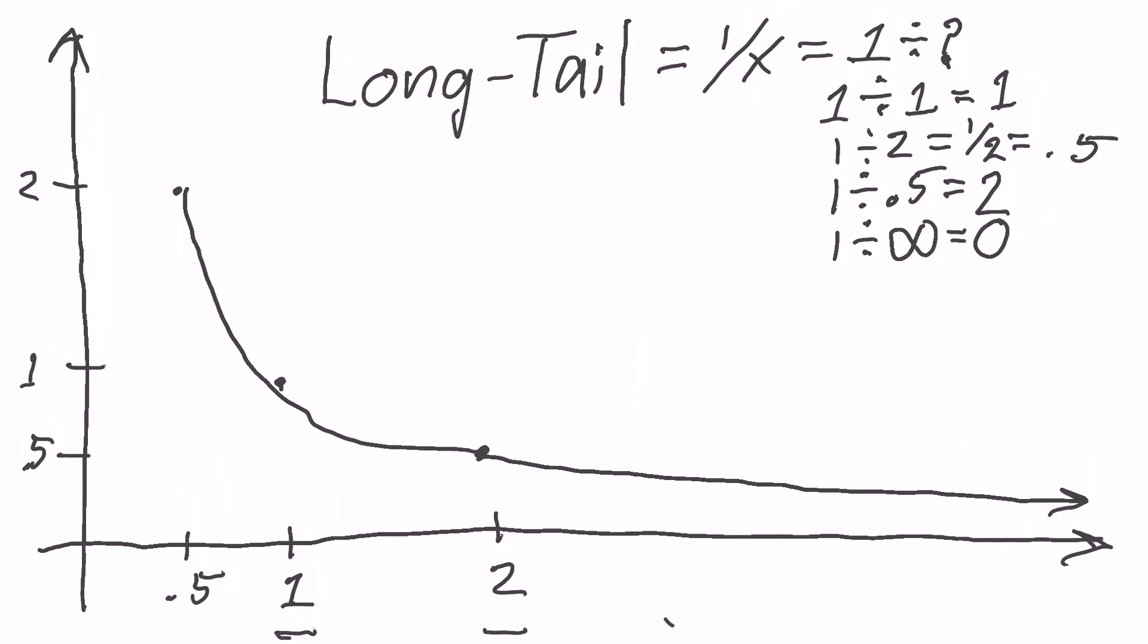And what about if you put smaller numbers in? 1 divided by 0. Well, this whole inverse relationship that characterizes the long tail, what do you think that equals? Yep, infinity. So as you put smaller and smaller numbers, likewise, this line gets forever closer, but never quite reaches 0 on the vertical.